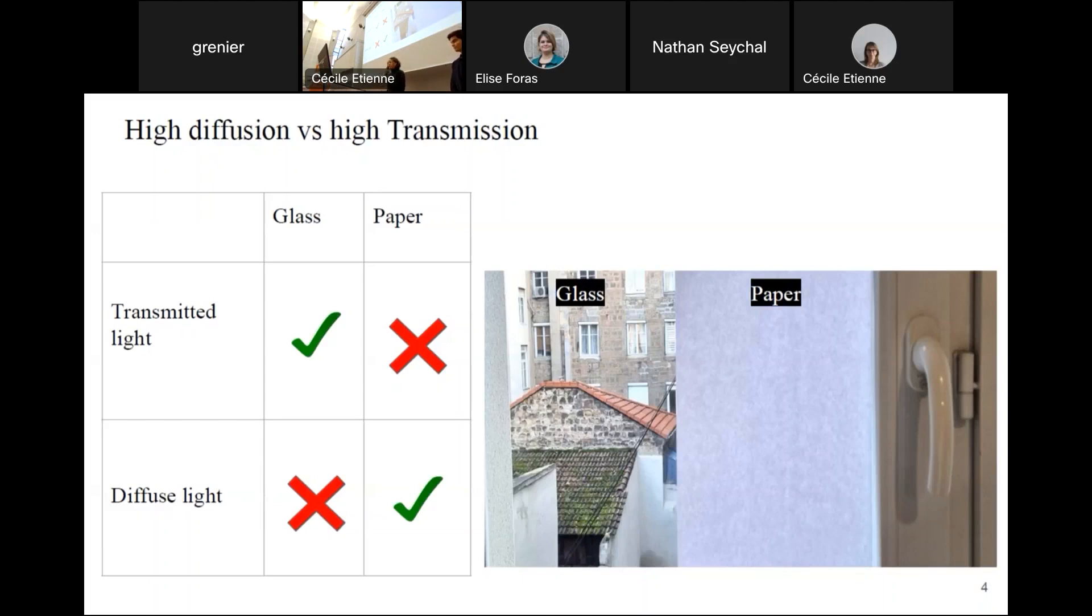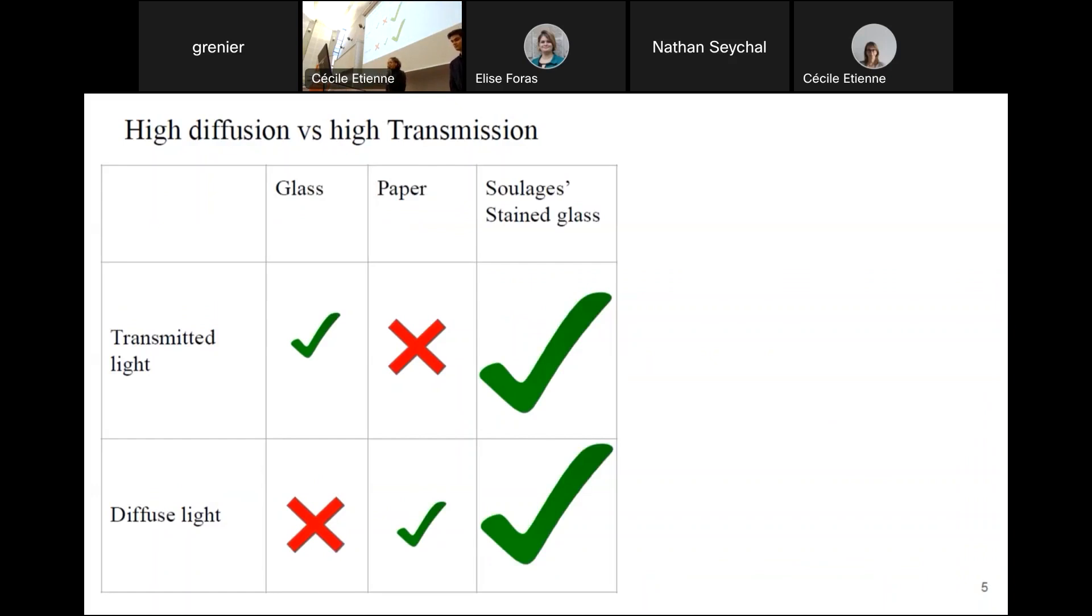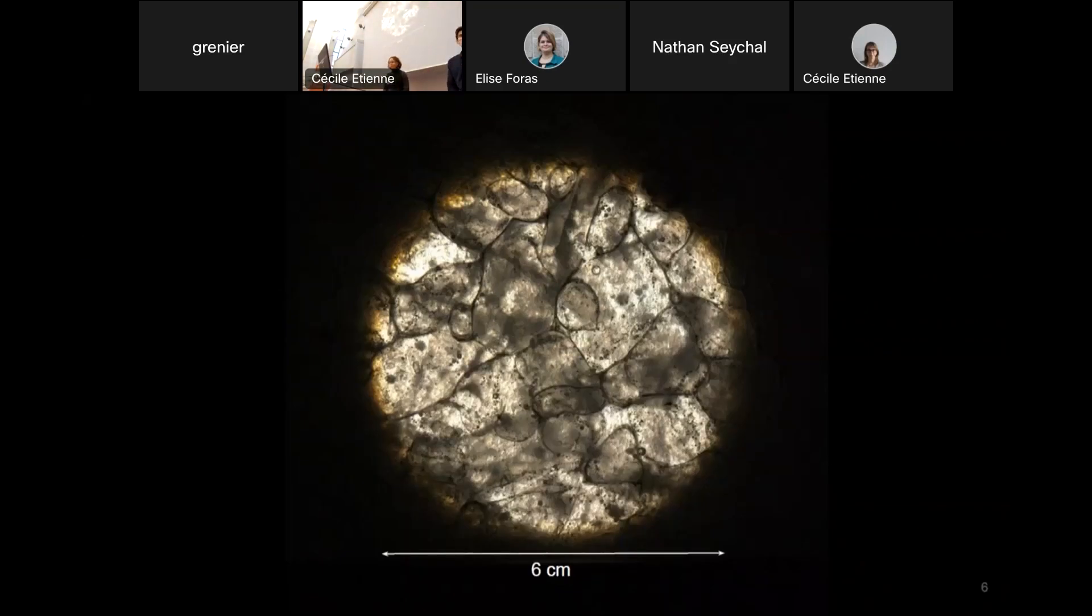But it takes more to discredit Soulages. He spent seven years experimenting until he reached his goal. And here it is. This is an agglomerate of many different types of glasses, melted and pressed together.